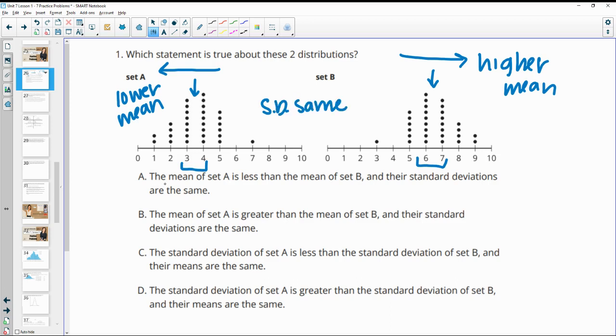So part A says the mean of set A is less than the mean of set B, which is what we talked about. A has a lower mean, B has a higher mean, and then their standard deviations are the same. So I would say A is going to be the true one.